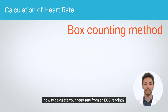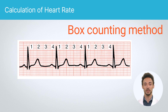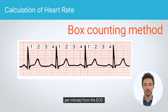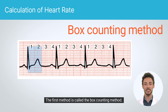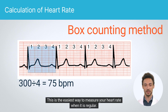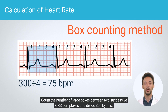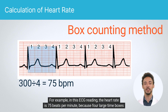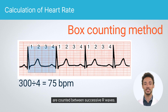How do you calculate your heart rate from an ECG reading? Two simple methods can be used to measure the heart rate – the number of heartbeats per minute – from the ECG. The first method is called the box counting method. This is the easiest way to measure your heart rate when it is regular: count the number of large boxes between two successive QRS complexes and divide 300 by this number. For example, in this ECG reading, the heart rate is 75 beats per minute, because four large time boxes are counted between successive R waves.